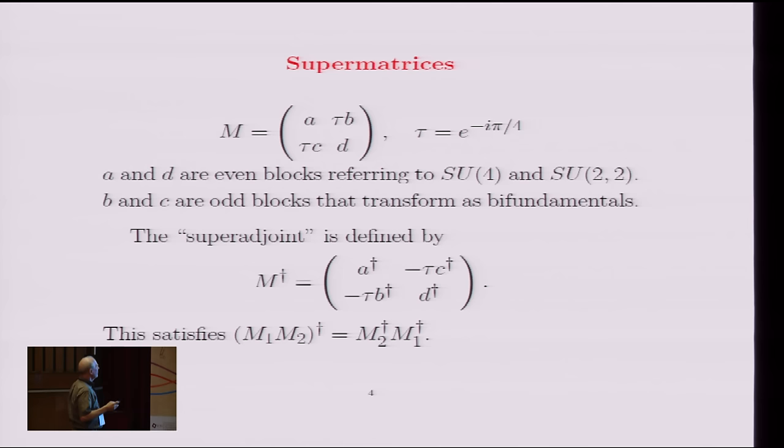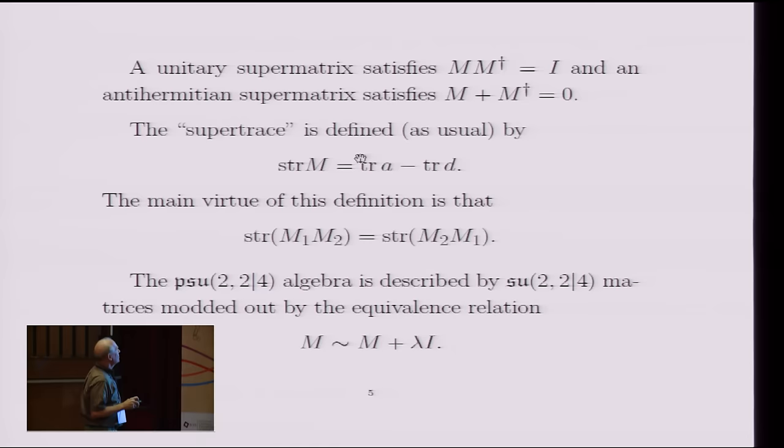So it's just a matter of taste whether you choose to put in this phase or not. It's a question of redefining the B and C accordingly. When you define things this way, the appropriate thing to call the adjoint, which isn't the usual adjoint. For the bosonic blocks, it's the usual adjoint. And for the fermionic blocks, this is the adjoint.